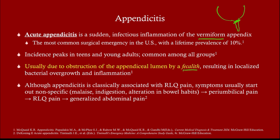In children, there is a slightly more common cause than the fecalith — which is the main cause in adults and is just calcified stool. In children, the number one cause is lymphoid hyperplasia, which essentially means inflamed lymph nodes. You've probably heard this before — it can also serve as a lead point for intussusception. The cause of lymphoid hyperplasia in children is typically viral gastroenteritis, so look for that in the history.